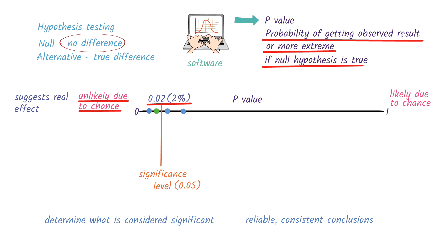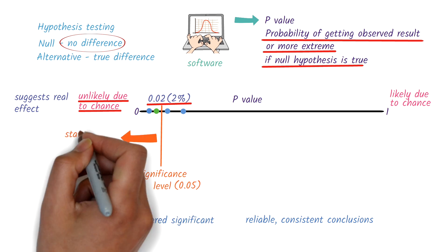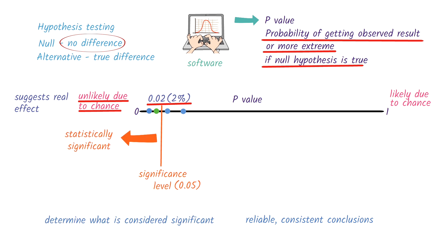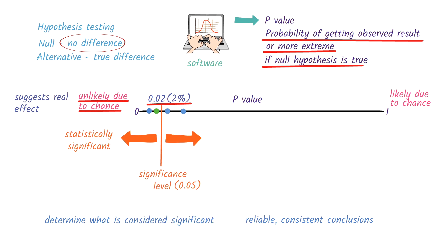If the p-value is smaller than this threshold, we say the result is statistically significant. On the other hand, if the p-value is larger, we consider the results not statistically significant.